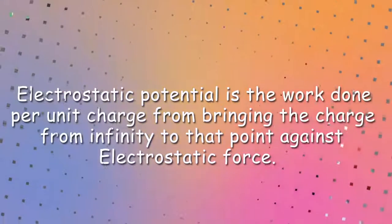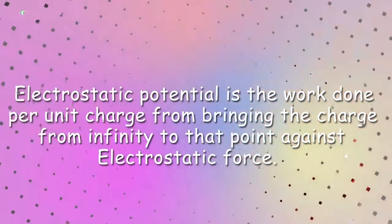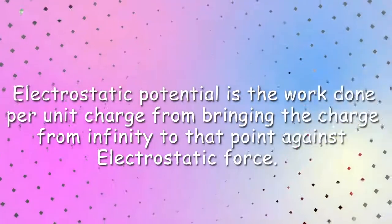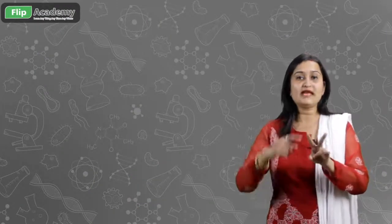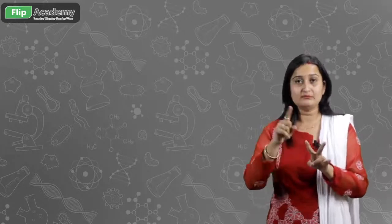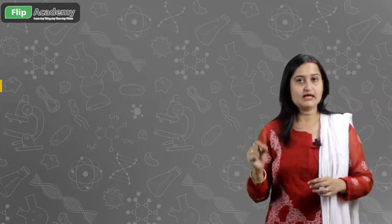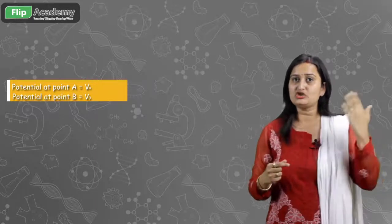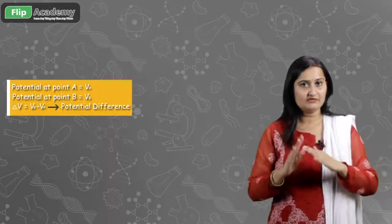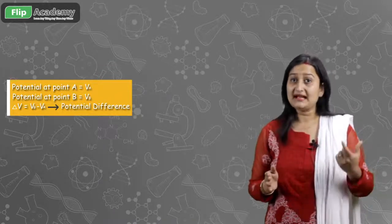Electrostatic potential is the work done per unit charge in bringing the charge from infinity to that point against the electrostatic force. From this definition, we are talking about two points. The potential at point A is called VA, at point B is called VB, and the difference is delta V = VB minus VA.